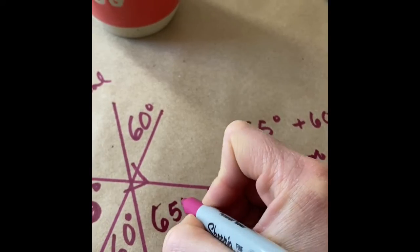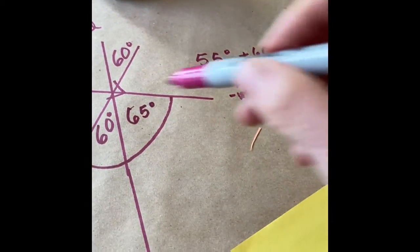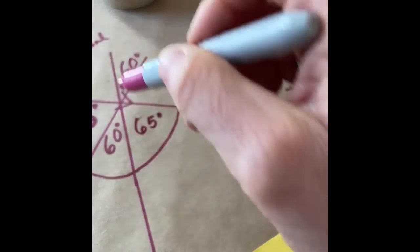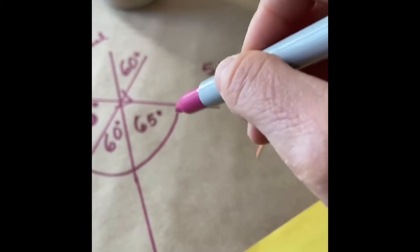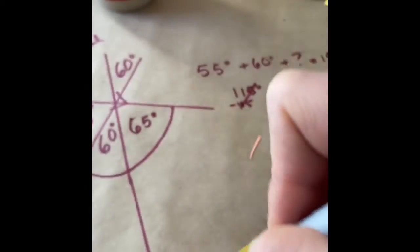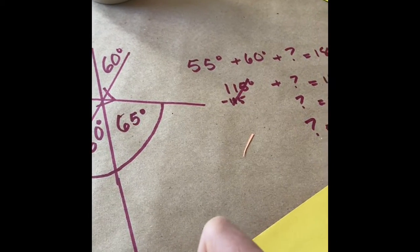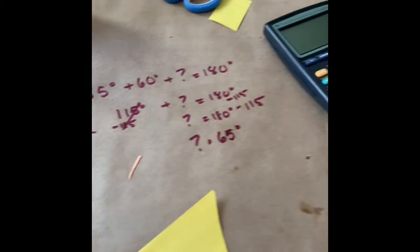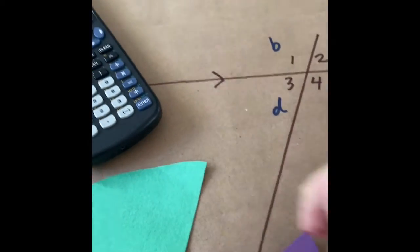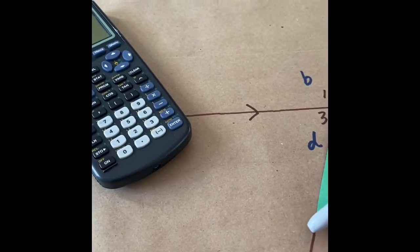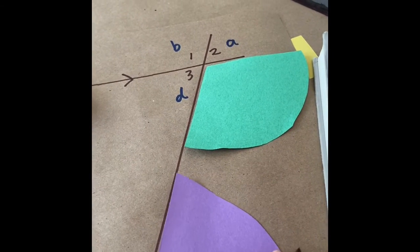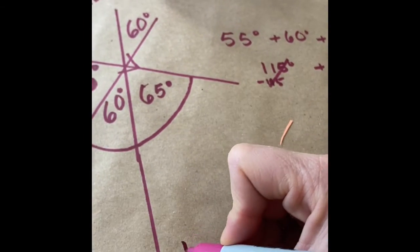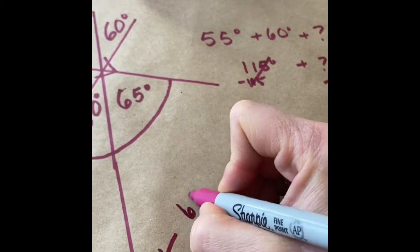Now notice we have parallel lines again and if we have parallel lines again I can use the C pattern again. I see that this angle here and this angle here would make a C pattern. So if I wanted to find this one that would be like over here me knowing this one and wanting to find this one, we know that they're supplementary, they add up to 180. So to find this, 65 plus what number gives me 180?